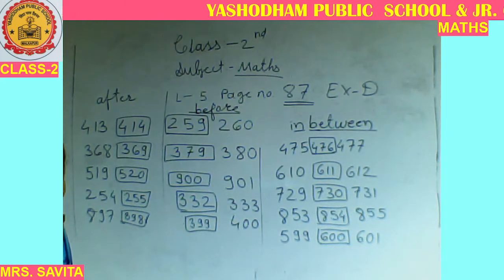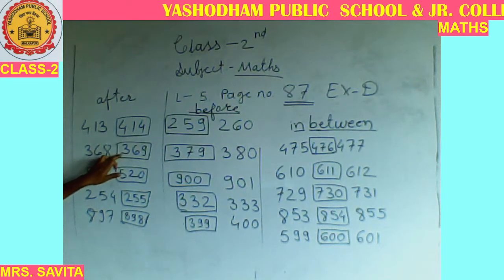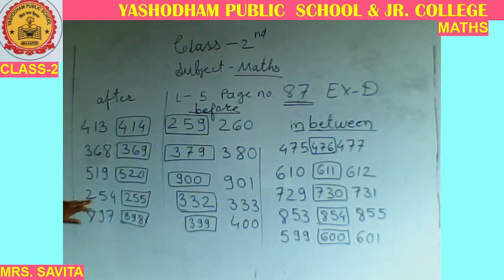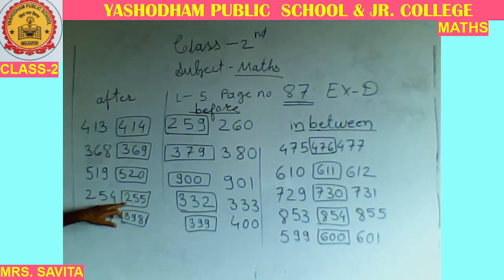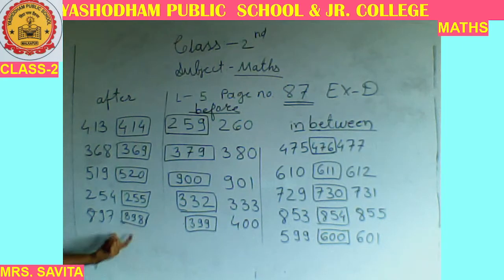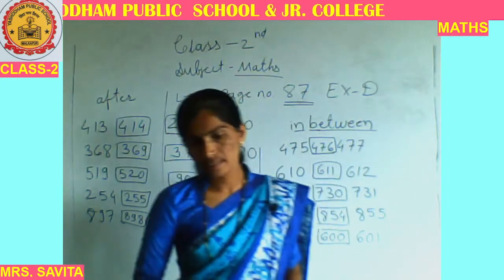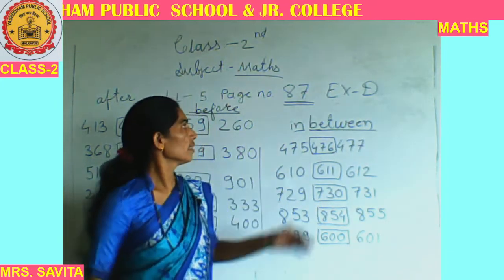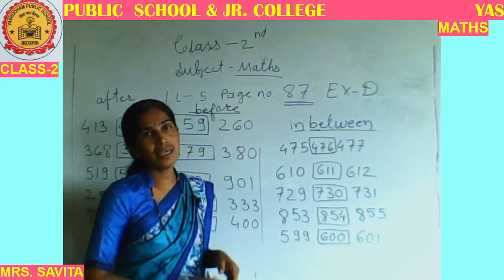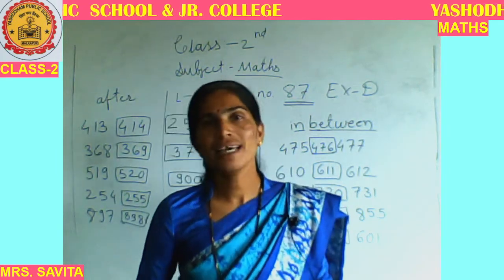Let's check. So this way: 413, 414 — 368, 369 — 519, 520 — 254, 255 — 897, 898. Got it? So this way today we completed Exercise D. So write the same answers in your textbook. And the next exercise we will see in the next video. Thank you. Bye. Have a nice day.